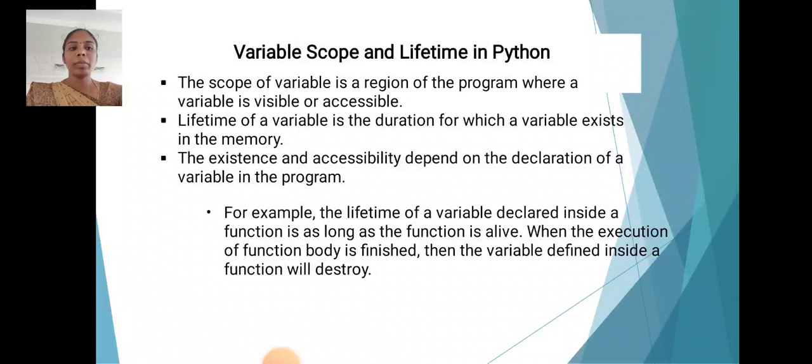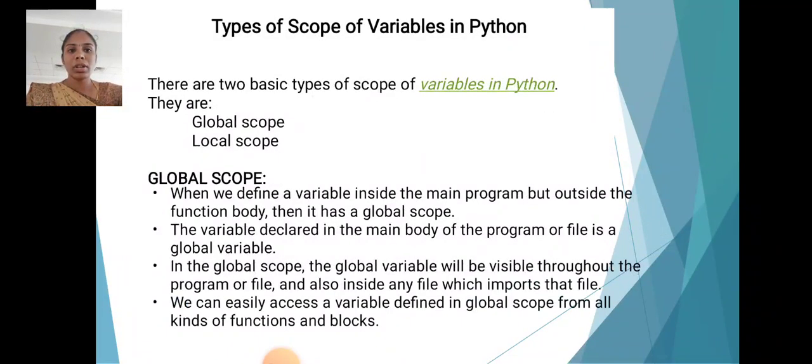For example, the lifetime of a variable declared inside a function is as long as the function is alive. When the execution of a function body is finished, then the variable defined inside the function will be destroyed. Types of scope of variables in Python: there are two types - global scope and local scope.